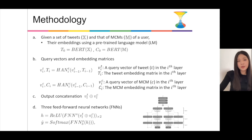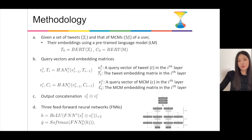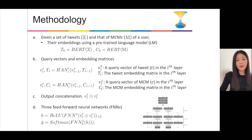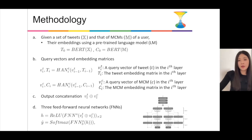In the next step, it computes query vectors and embedding matrices for the input features. And once the learning process is done, the output of the two modules is concatenated to form a joint representation for the input user. This representation is fed into three feed-forward neural networks, followed by a softmax layer, which will output a binary label for the input user.